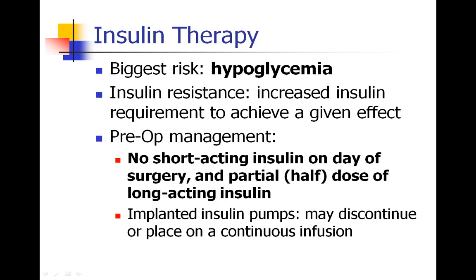When we treat people with insulin, the biggest risk of course is hypoglycemia — that we can drop their blood sugar too low. We give insulin not just for type 1 diabetics, who are unable to generate their own insulin, but also for type 2 diabetics, who have developed an insulin resistance. These patients have an increased requirement for insulin to achieve a given effect, so the amount their pancreas makes is no longer sufficient, and an advanced type 2 diabetic may need insulin supplementation.